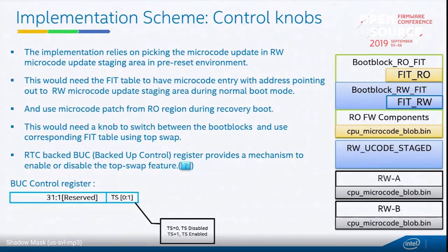In general, the implementation relies on picking the microcode update from the RW staging area. This requires the FIT allocated in the second boot block to point to the RW staging area. You need a knob to switch between the two boot blocks — that knob is provided by the RTC backup control register, which uses the top swap feature to pick either of the two boot blocks.